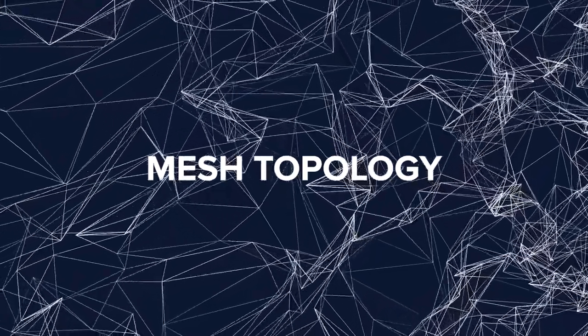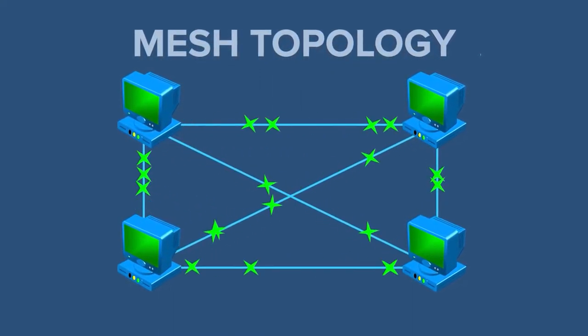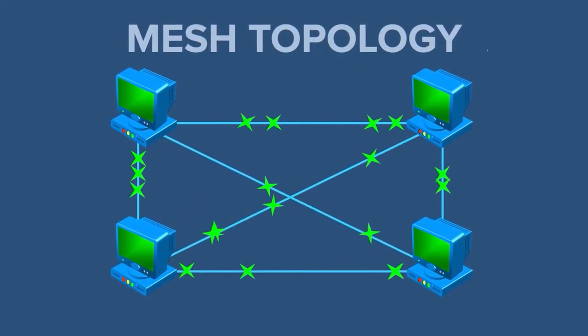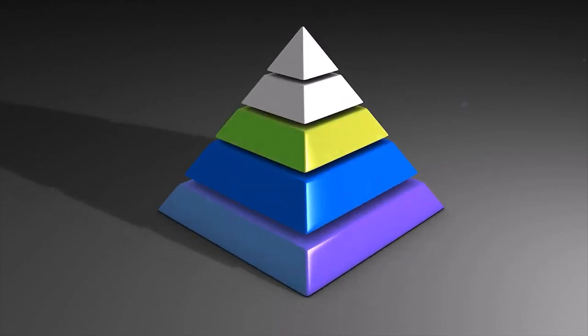Mesh topology is a widely used network model that has a point-to-point connection between each node in the network. Every node or device in a mesh network connects to other nodes directly and in a non-hierarchical manner.